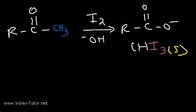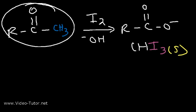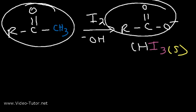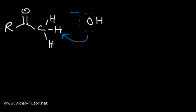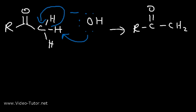Now let's talk about the mechanism of the haloform reaction, going from this methyl ketone into the carboxylate ion. Let's say that the R group doesn't have any alpha hydrogens. The alpha hydrogen is a hydrogen that's one carbon away from the ketone group. In the first step, hydroxide is going to act as a strong base and remove an alpha hydrogen. The carbon-hydrogen bond is going to break, and those electrons will return to the carbon atom. We're going to get an intermediate — a CH₂ with a negative charge on the carbon.